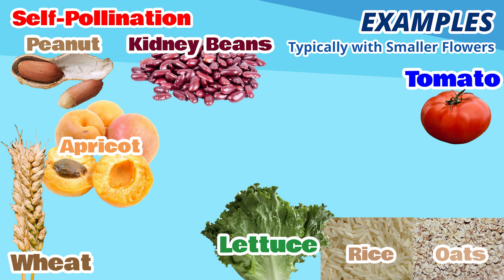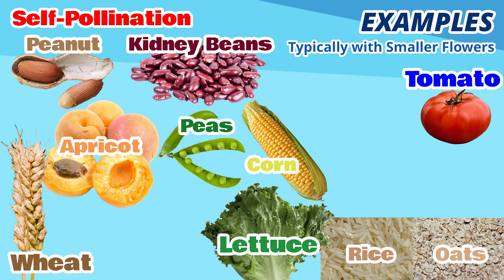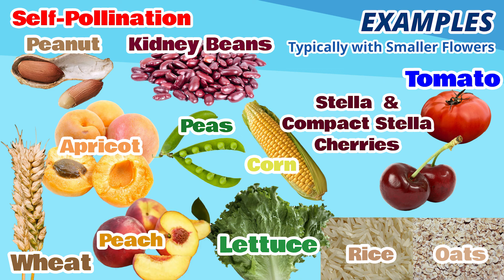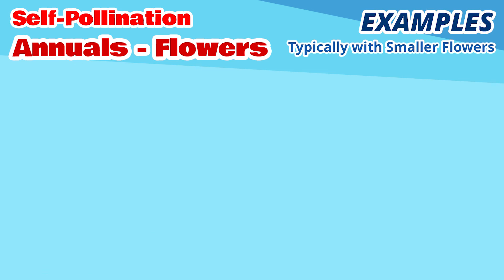Also lettuce, peas. Corn is pollinated by the wind. Certain cherry trees — sweet cherry stella and compact stella — self-pollinate. Peach trees are self-pollinating. Annual flowers are often self-pollinating because they need to pollinate quickly due to their limited lifespan — annuals only last one annual cycle.